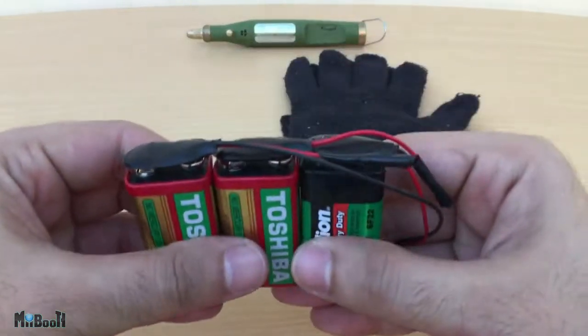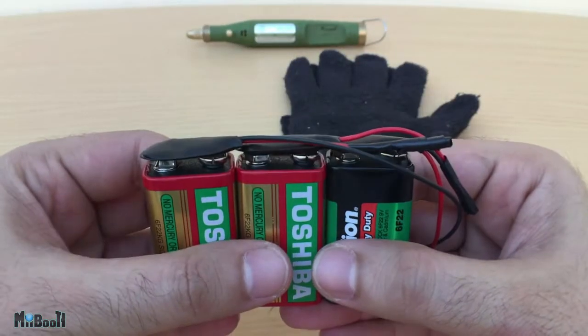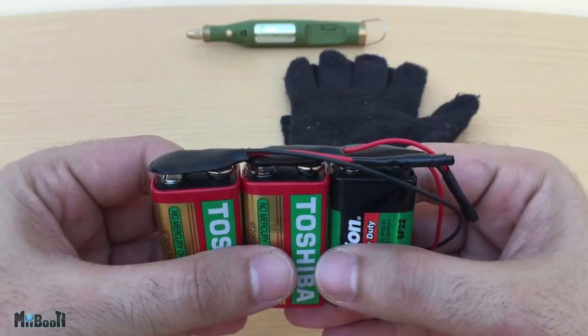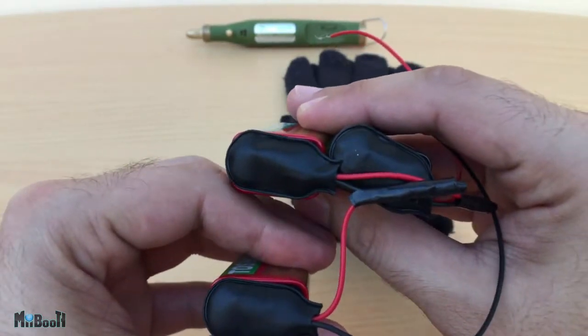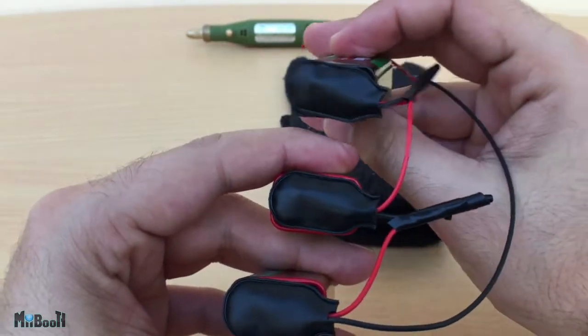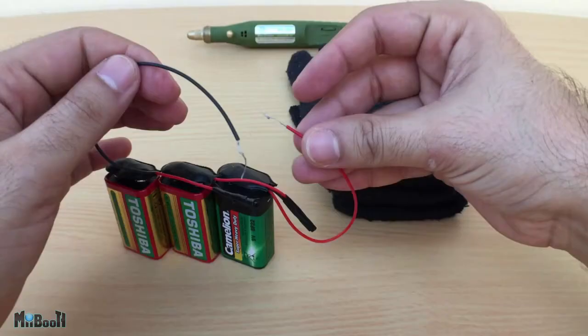First of all, I took three 9V battery connectors, mounted them on 9V batteries and connected them in series as you can see. Black to the red cable of the neighboring batteries and we have two free terminals in the end, a negative and a positive. This way we are getting around 27V out of the three batteries.